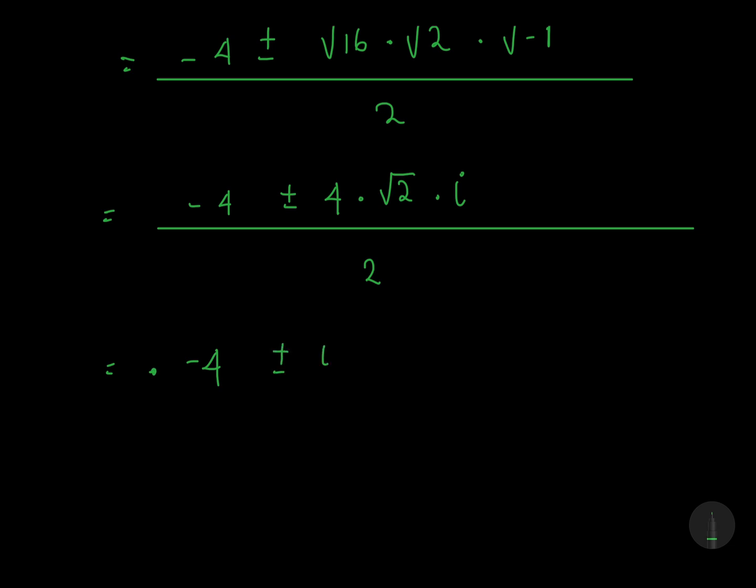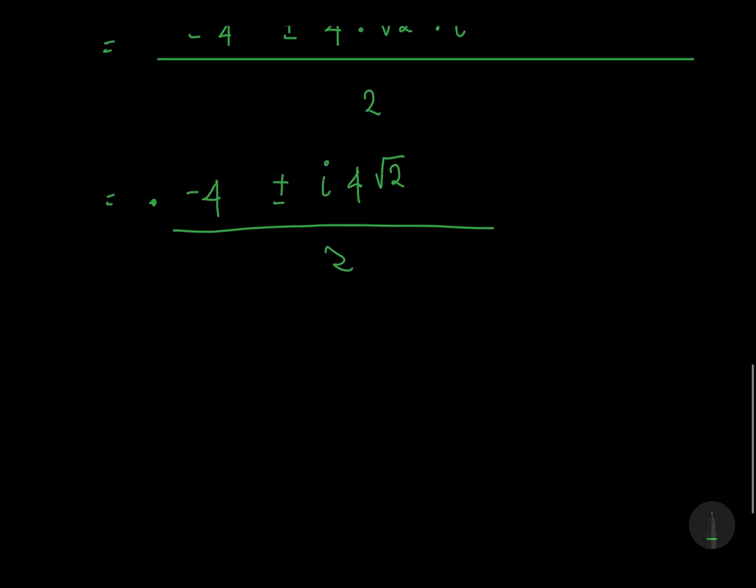This is, we'll have -4, 4√2·i, divided by 2. If we divide by 2, we'll have -2 ± 2i√2.